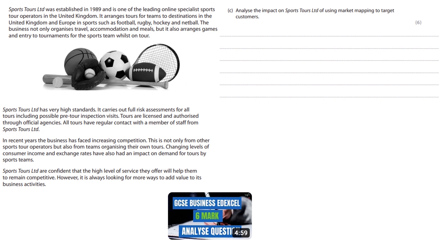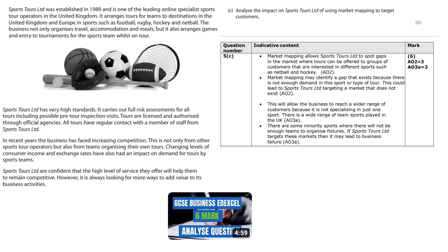Pause the video and give this question a go. For one of your points, you might have had that market mapping allows Sports Tours Limited to spot gaps in the market where tours can be offered to groups of customers interested in different sports such as netball and hockey. Another point: market mapping may identify a gap that exists because there is not enough demand in a type of sport or tour, which could lead to Sports Tours Limited targeting a market that does not exist. For your analysis: this will allow the business to reach a wider range of customers because it is not specialised in just one sport. However, there are some minority sports where there will not be enough teams to organise fixtures, and if Sports Tours Limited targets these markets it may lead to business failure.